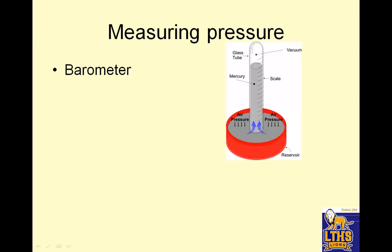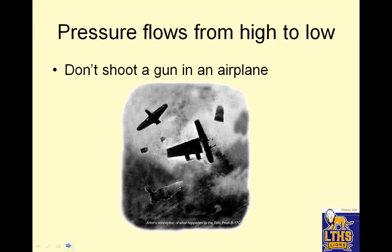Measuring pressure: a barometer works because outside air pressure pushes down on an open reservoir. There's a vacuum at the top of the tube, so if it pushes really hard it pushes mercury up to a high level. If it's a low force, the mercury only rises a little. Pressure flows from high to low.